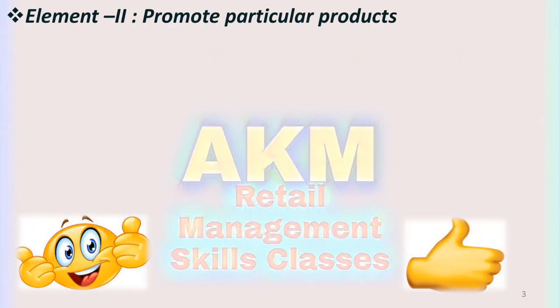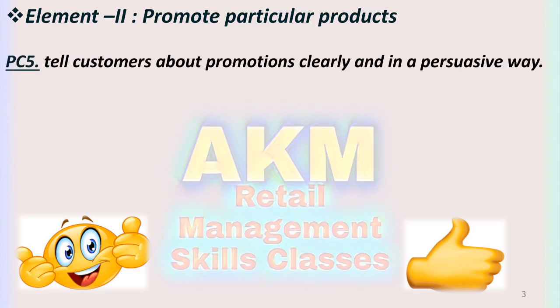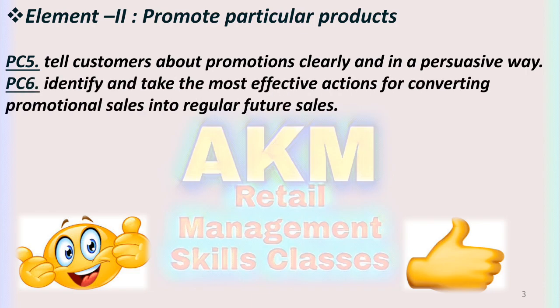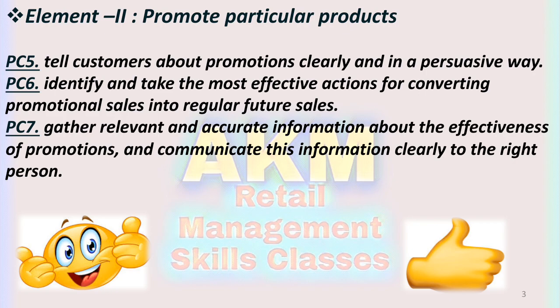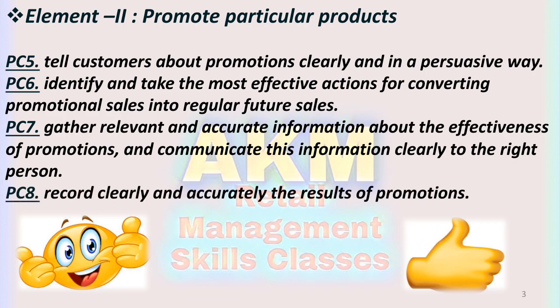Element Two: Promote particular products. PC5 — tell customers about promotions clearly and in a persuasive way; PC6 — identify and take the most effective action for converting a promotional sale into a regular future sale; PC7 — gather relevant and accurate information about the effectiveness of promotions and communicate this clearly to the right person; PC8 — record clearly and accurately the results of promotion. There are eight performance criteria divided into two elements, with four performance criteria in each.